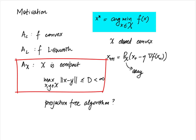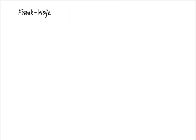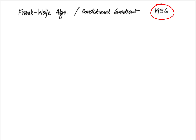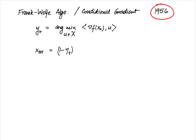Let us look at the conditional gradient or the Frank-Wolf algorithm, proposed by Frank and Wolf back in 1956, in the era when gradient descent was the only practical algorithm. It was mostly forgotten as people focused on faster algorithms like Newton's method or interior point methods. However, it made a resurgence in the era of big data, where it was shown to be much easier to implement for certain L1-norm and nuclear norm constraint problems. Its updates are: y_t = argmin_{u in X} <gradient f(x_t), u> and x_{t+1} = (1 - eta) * x_t + eta * y_t.